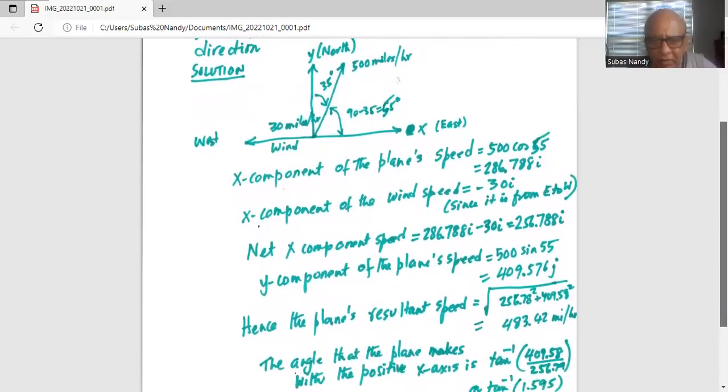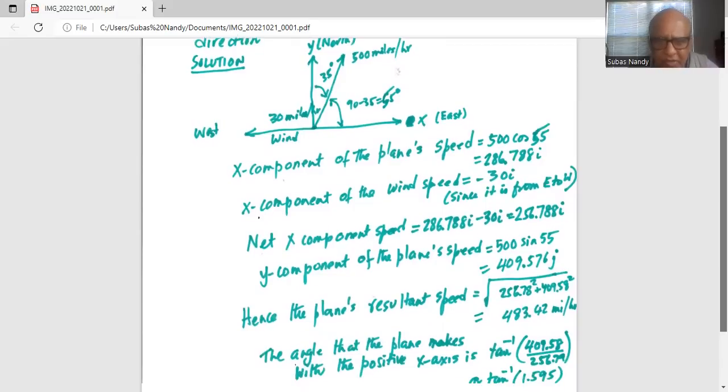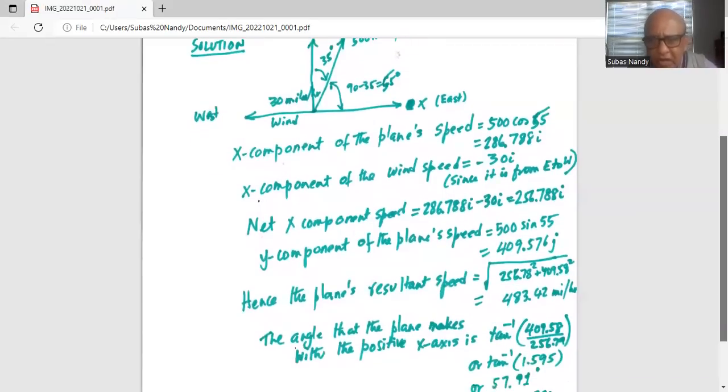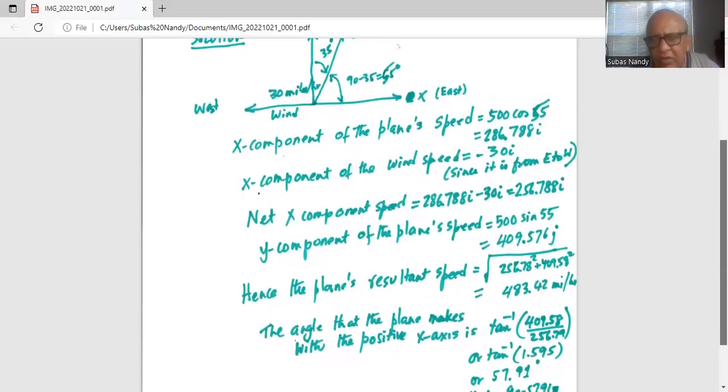What is the plane's angle with the x-axis? Positive x-axis is tangent inverse of y component over x component, which is 409.58 divided by 256.78, or tangent inverse of 1.595, or you can call it the arc tangent 1.595. That means we need to find the angle using the tangent inverse in our calculator.